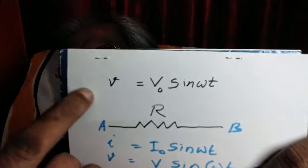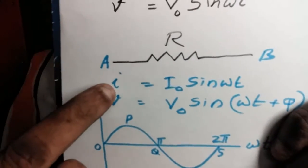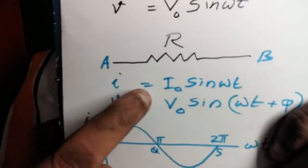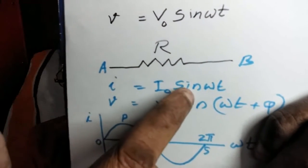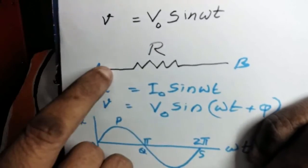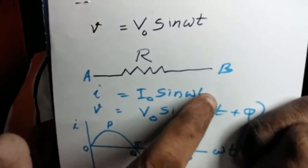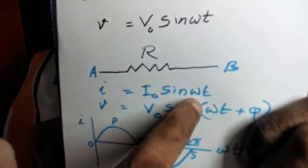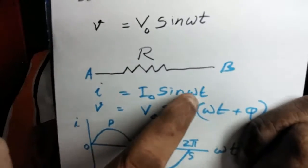This represents a sinusoidal AC voltage. And the corresponding sinusoidal current is represented by I equals I₀ sine omega t. Here, t is the time factor and omega is the frequency factor. Omega t is called the phase of the AC.